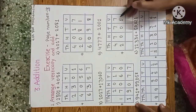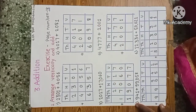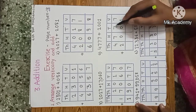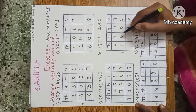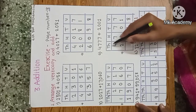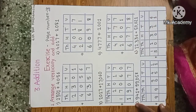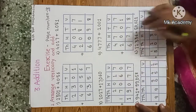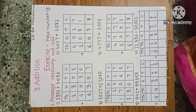Next example: 4,777 plus 2,001. This is vertical arrangement. Start from unit place: 7 plus 1 is 8; tens: 7 plus 0 is 7; hundreds: 7 plus 0 is 7; thousands: 4 plus 2 is 6. The answer is 6,778. This addition is without carrying over — all these examples are without carrying over.